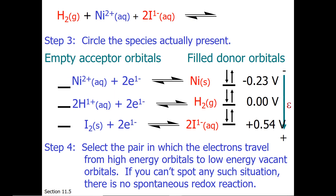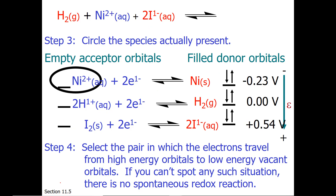Step 3: we need to circle the species that are actually present. What often happens is students say, 'Nickel is my best reducing agent and I₂ is my best oxidizing agent — reaction!' But do we have nickel? We have nickel-2+, not nickel metal. And we don't have I₂; we have I⁻. So we need to circle what we actually have: nickel-2+, H₂ gas, and iodide.